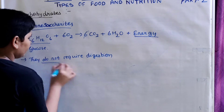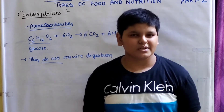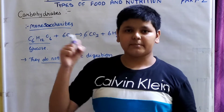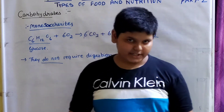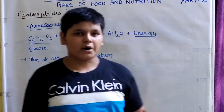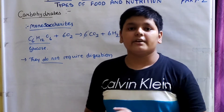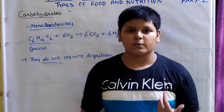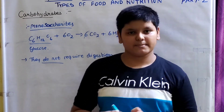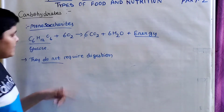Monosaccharides do not require digestion. For example, if a person is low on energy or admitted in hospital, they are given drips of glucose. Glucose is directly absorbed by the blood and energy is given to the body. It does not require any assimilation or absorption process. That is why glucose, as a monosaccharide, does not require digestion.